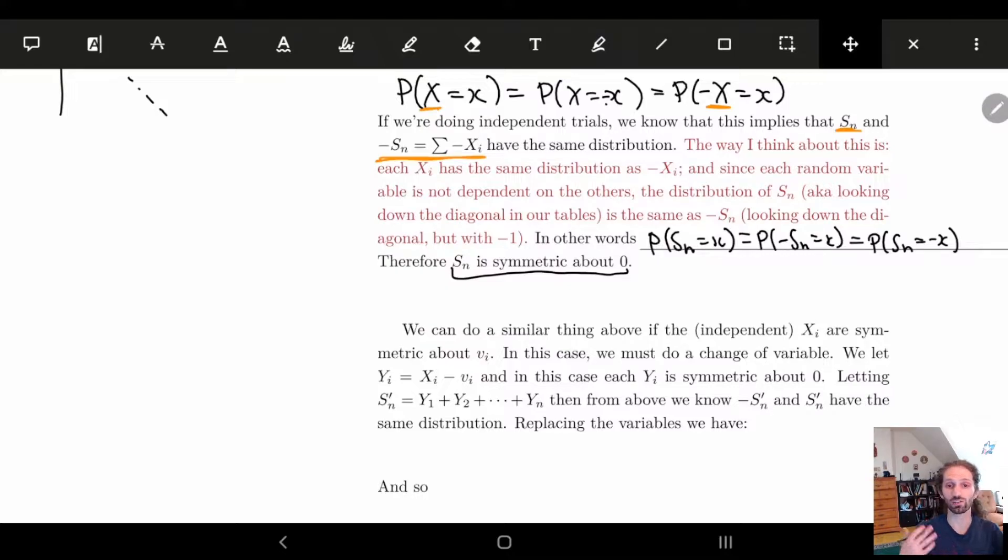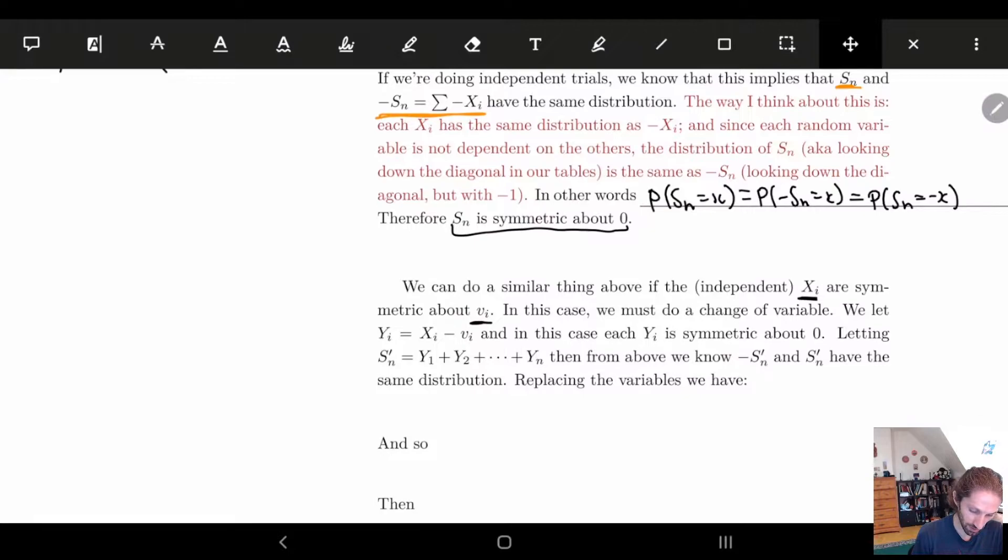And so this we can actually do in a very similar way if we have xi being symmetric about vi. And so it's basically the same thing, except here what we're going to do is first we're going to convert each of these xi's into new random variables, and we make them equal to yi, which is xi minus vi. Basically, this is helping us delete that vi. We're making this equal to zero. And then what happens is then the yi is symmetric about zero, right?